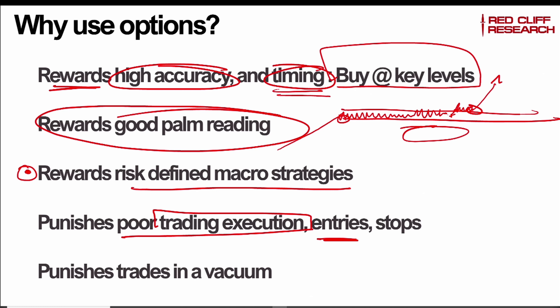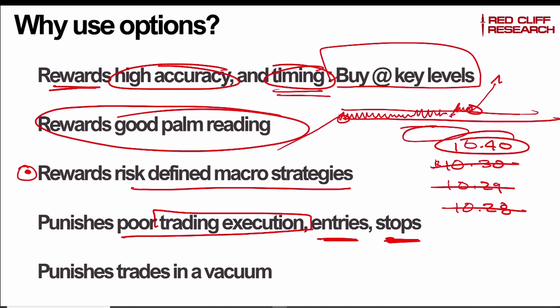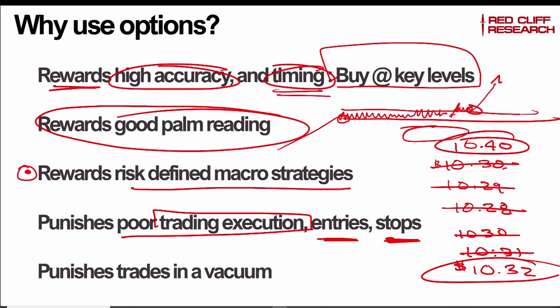Options punish poor trading execution. If you're undisciplined, this is not going to help you. It's going to punish bad entries and bad stops. If you're one of those guys who says, 'maybe it'll turn around, I'm not going to stop out' — options are not for you. You have to be Johnny on the spot on stops and getting good fills. To get a fill, many times you have to put in a limit order, and because of the liquidity volume, you might have to go $10.30, then cancel and do $10.31, $10.32, until you get the fill. If you don't have that kind of discipline, then options are probably not for you.